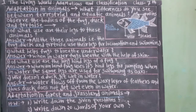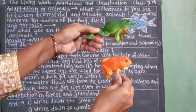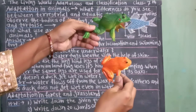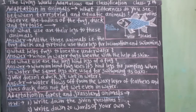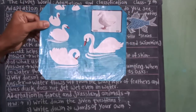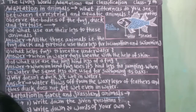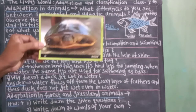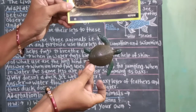Look at this. Frog — frog means beduk. Duck — duck means badak. Tortoise — tortoise means kasav.